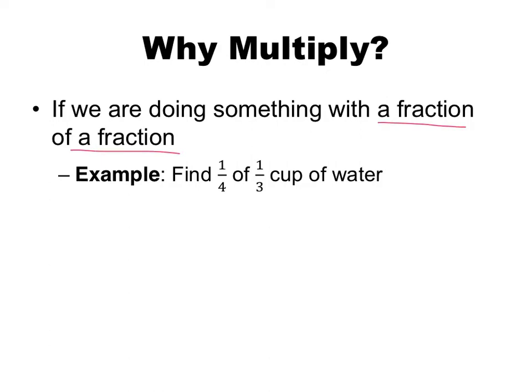One example we worked in section 5.1a is to find a quarter of one-third of a cup of water. We see we're doing something with a fraction of a fraction. To solve this, we take one-fourth times one-third, do that arithmetic, and we're done. We multiply if we're doing something with a fraction of a fraction.